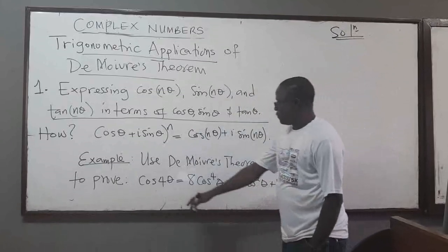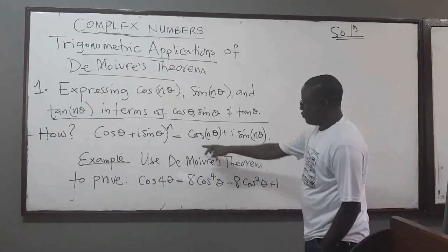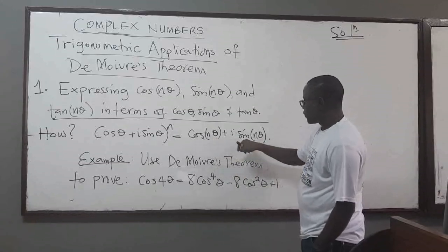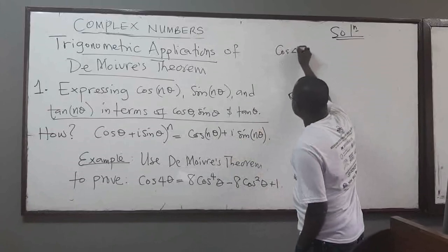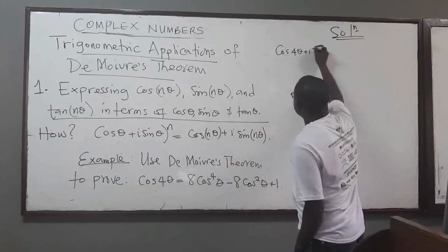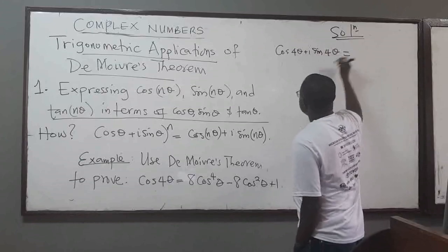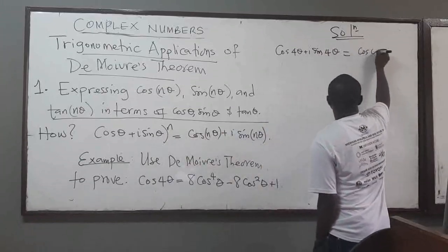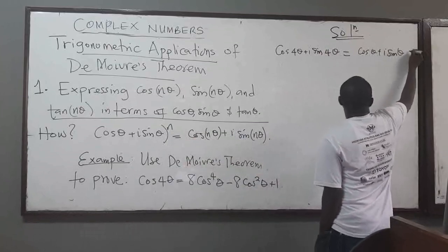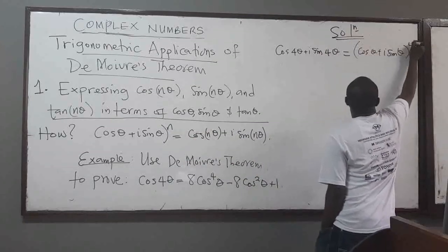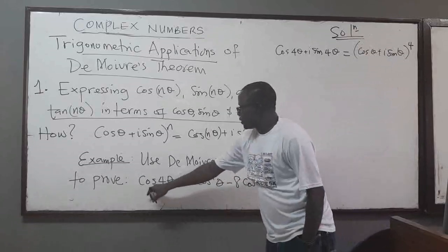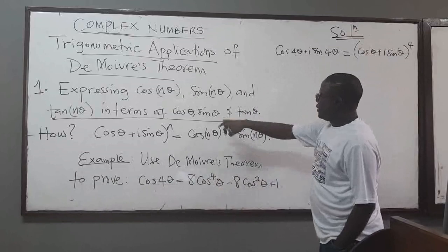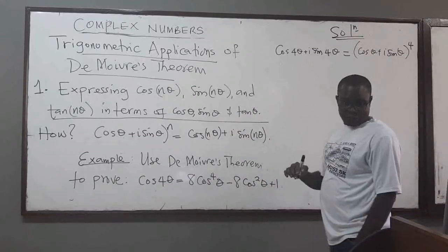We have 4θ here, so we need to let n = 4. So if I have cos(4θ) + i sin(4θ), I can rewrite this going backward as (cos θ + i sin θ)^4. This is what we want on the left-hand side. What we do is expand this using binomial expansion.